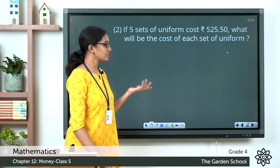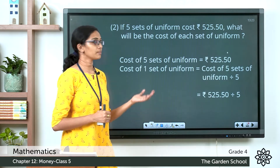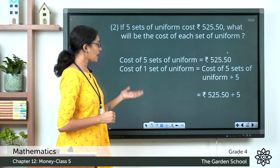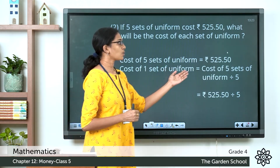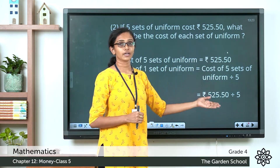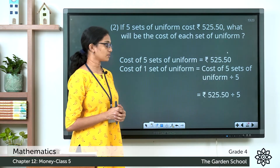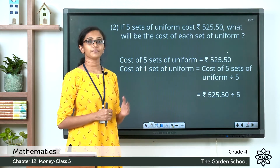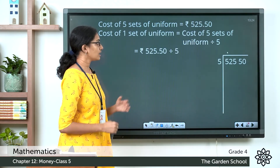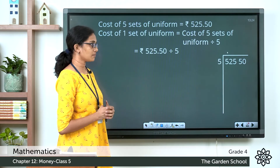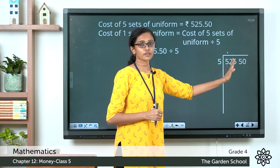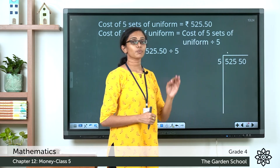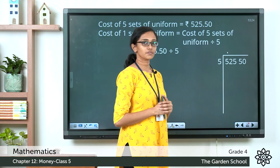Let's see the steps. The cost of 5 sets of uniform is 525 rupees 50 paise. The cost of one set equals the cost of 5 sets divided by 5, the number of sets. So that is 525 rupees 50 paise divided by 5. Write the numbers without the dot to do the division. Ignore the dot and continue with the division; when complete, place the dot in the quotient.